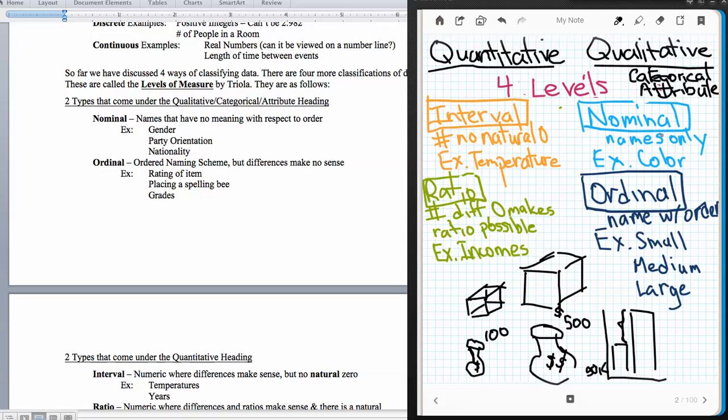Nominal is the very most basic type of data. Names that have no meaning with respect to order. They're names only. An example of nominal data would be colors. If I'm going to talk about the M&Ms in a bag, I can talk about red M&Ms, green M&Ms, blue M&Ms, yellow M&Ms, brown M&Ms. Those are names only. They're nominal data.